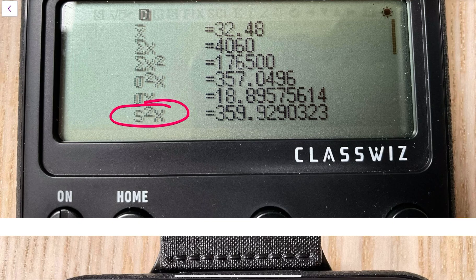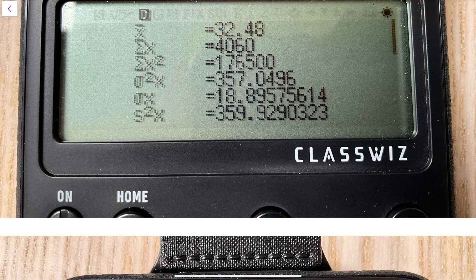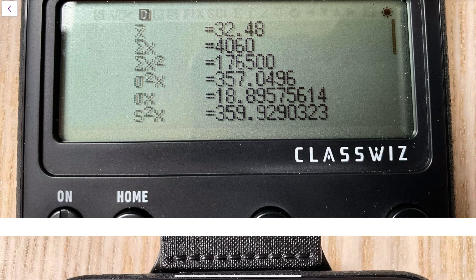And the last one we have got here is s²x, and that's again if you've got a sample of the whole population and you want to use your sample to estimate the whole population's variance, which is just standard deviation squared.